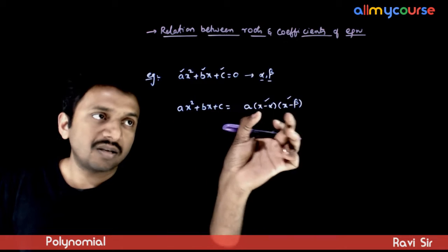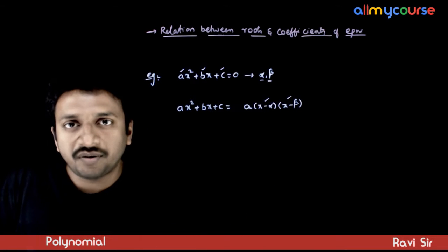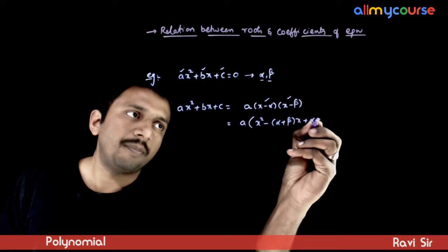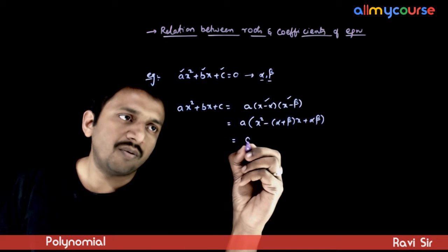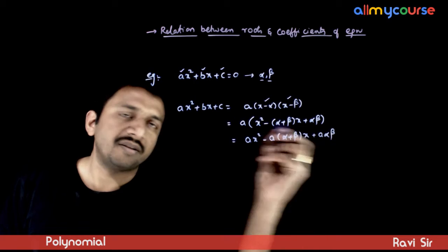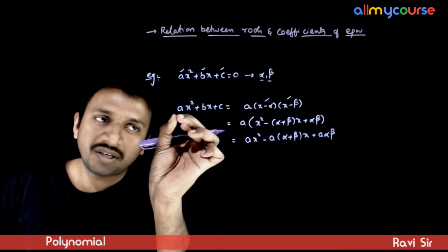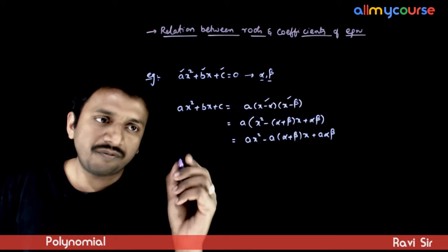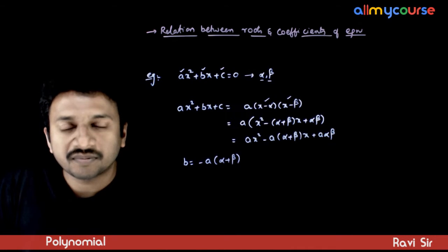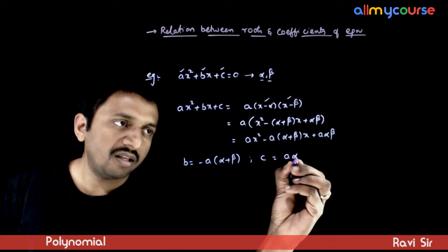Now, if you divide with (x minus alpha)(x minus beta), you get the coefficient as a. So this is equal to a times (x minus alpha)(x minus beta), which equals a times [x squared minus (alpha plus beta)x plus alpha·beta], which equals ax squared minus a(alpha plus beta)x plus a·alpha·beta. Now these two polynomials are equal. So the x squared coefficient a equals a, the x coefficient b must equal minus a times (alpha plus beta), and the constant term c must equal a·alpha·beta.